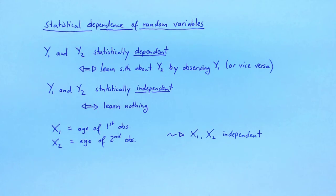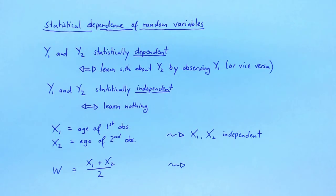Let's look at another example. Let w denote the average of x1 and x2. x1 and w are statistically dependent. Why is that? Suppose that I draw Alice first. Alice is the oldest member of the population. Even if in the second draw I draw only an averaged-aged person, I will still see a rather large sample average age. The fact that I have drawn Alice drives up the average.